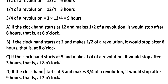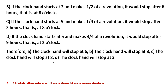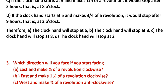D: if the clock hand starts at 5 and makes three-fourths revolution, three-fourths means 9 hours, so it would stop after 9 hours — that is, at 2 o'clock. Therefore: A stops at 6, B stops at 8, C stops at 8, and D stops at 2 o'clock.